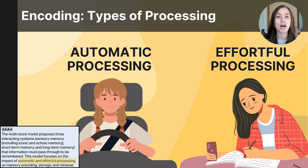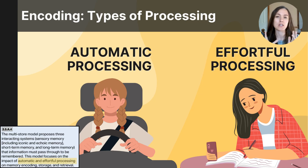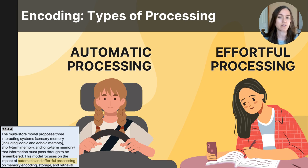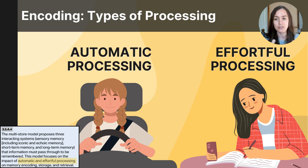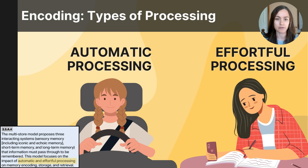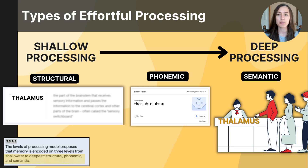These are examples of automatic processing, whereas effortful processing is when you are purposefully attempting to get information in. An example would be studying for a test — a situation where you are consciously and purposefully and intentionally trying to actively take in information, hoping you will remember it later. When you are purposely trying to create a memory for information, you are effortfully processing it.